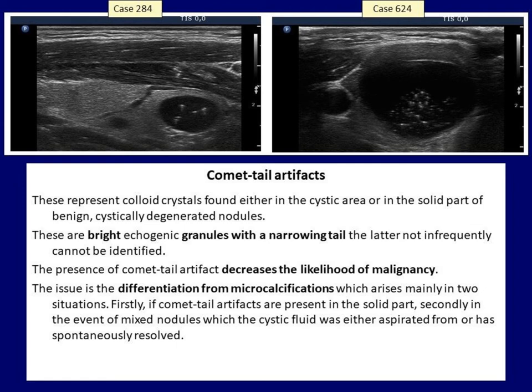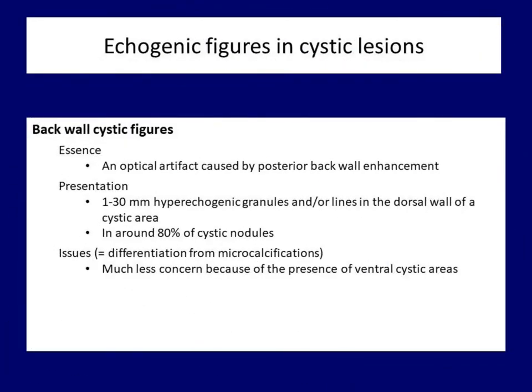The differential diagnostics of intranodular echogenic figures is discussed in a distinct chapter. The other intranodular echogenic figure is an optical artifact visible in the dorsal part of a cystic area, caused by posterior back wall enhancement. This is an even more common finding than comet tail artifact. Fortunately, it should not cause differential diagnostic problems because this artifact can be seen exclusively in the dorsal part of cystic areas — after removal of the fluid, these figures are no longer found. They may be punctate or linear; knowing this, we can avoid misinterpreting the granular form as microcalcification.